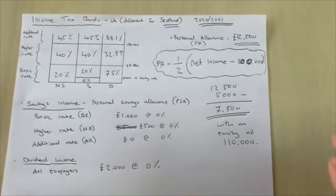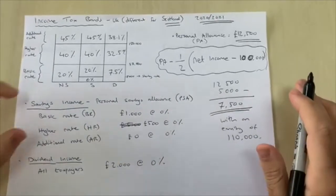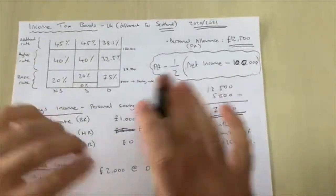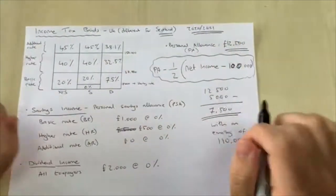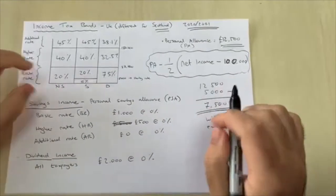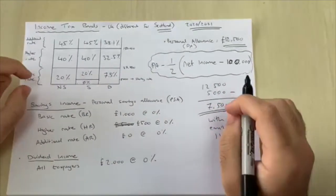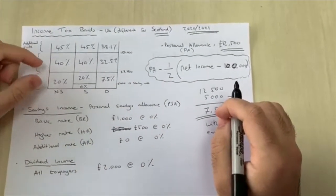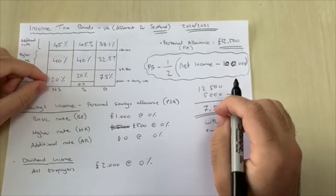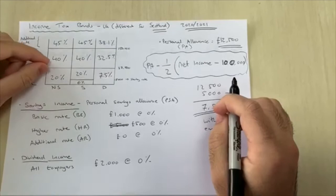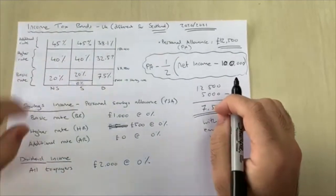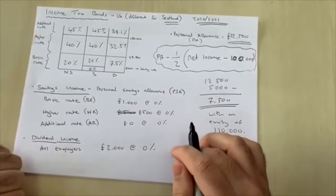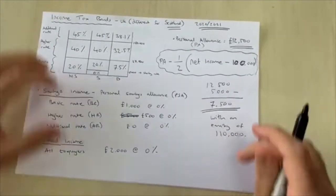This is for income tax in the UK, however not including Scotland, as the only difference with Scotland is that there are more tax bands and therefore more boxes in the diagram. But the same principle applies to what I'll be showing you.